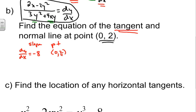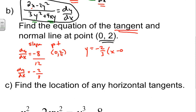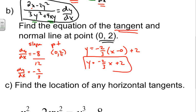Plugging 0 into the x terms in the denominator gives 0, and 3(2 squared) equals 12, so we get negative 8 over 12, which simplifies to negative 2/3. So our slope of the tangent line is negative 2/3. Writing the tangent line equation: y equals negative 2/3 times (x minus 0) plus 2, giving us y equals negative 2/3 x plus 2.